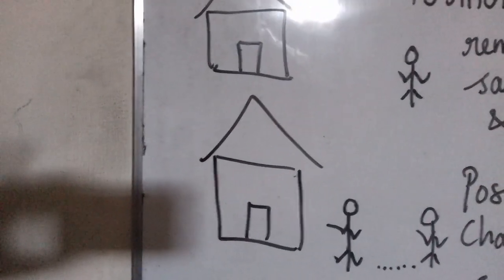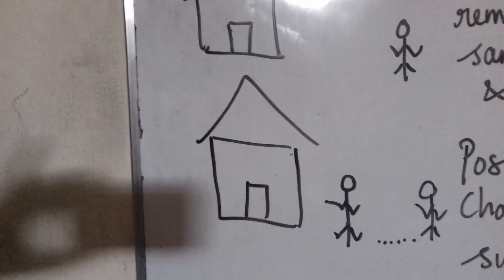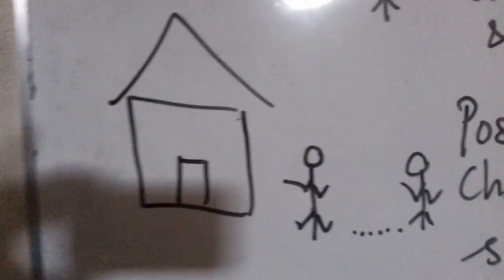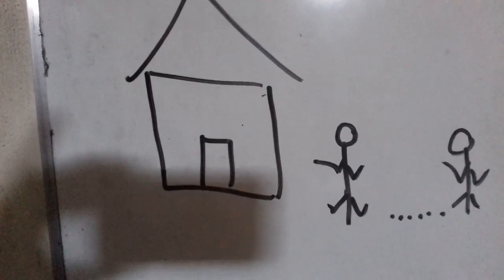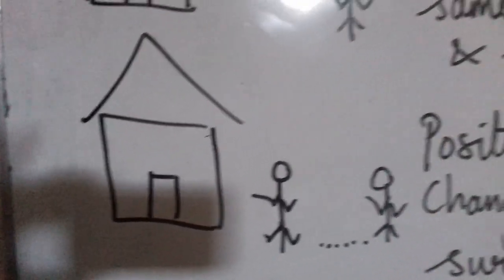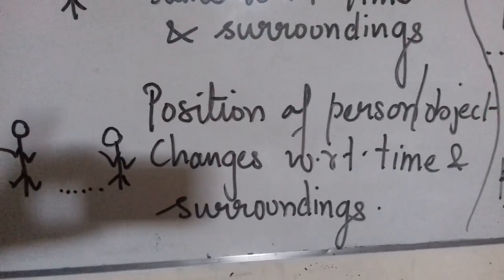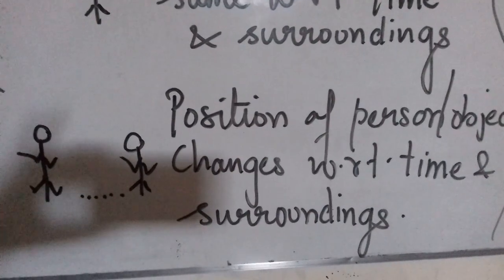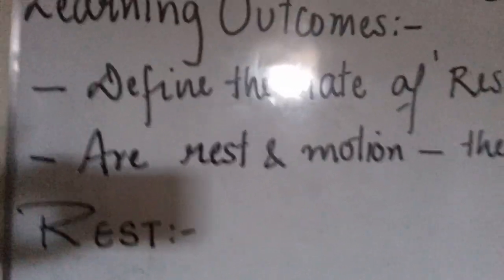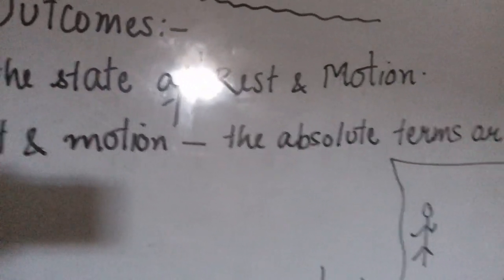On the other hand, if a person is moving, his position is changing with respect to the house, then we say that the person is in motion. So we can say a person is said to be in motion when the position of a person or object changes with respect to time and surroundings. So students, you should now be able to answer the first learning outcome: define the state of rest and motion.